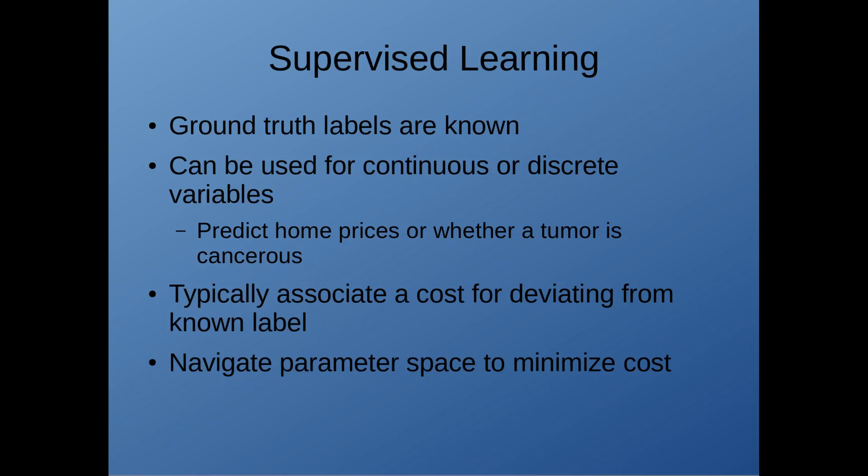Typically, since we know the ground truth label for our training data, we can associate a cost with the deviation of our model output from that known label. This allows us to navigate parameter space to minimize that cost. What I mean by parameter space is a higher dimensional space composed of the parameters of your model.